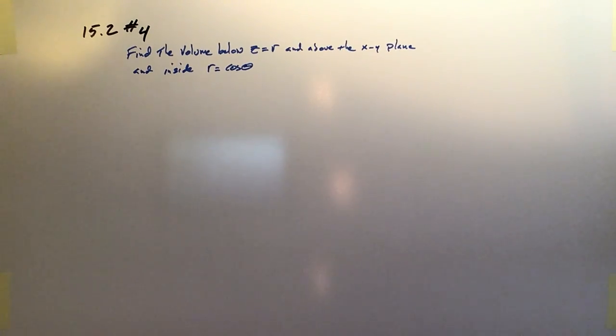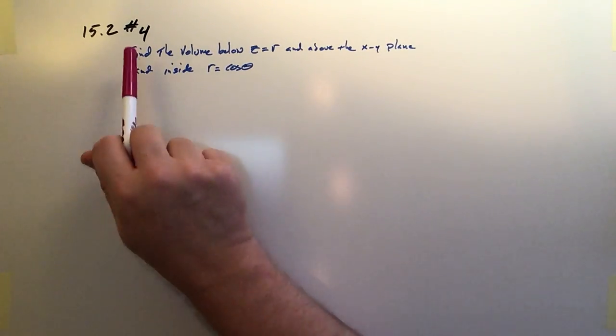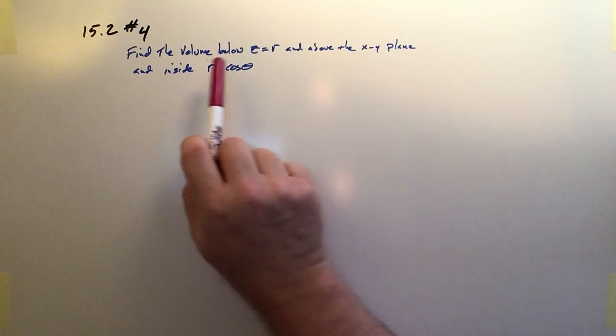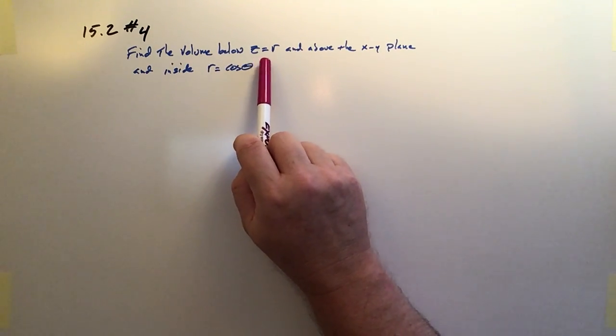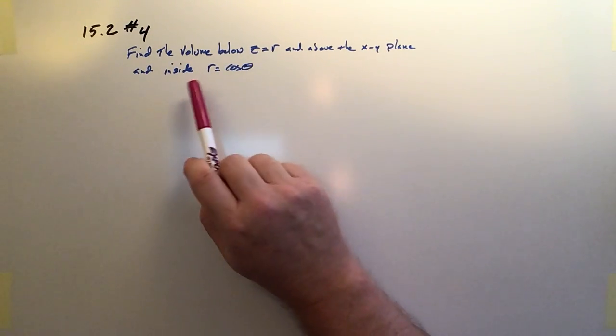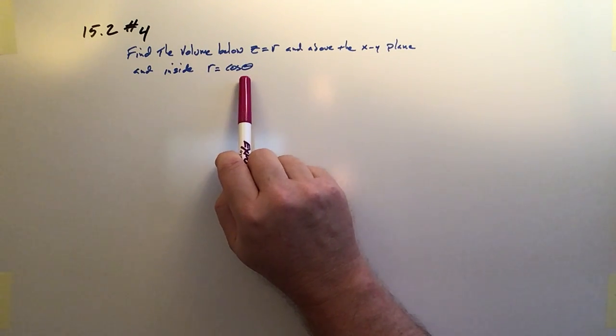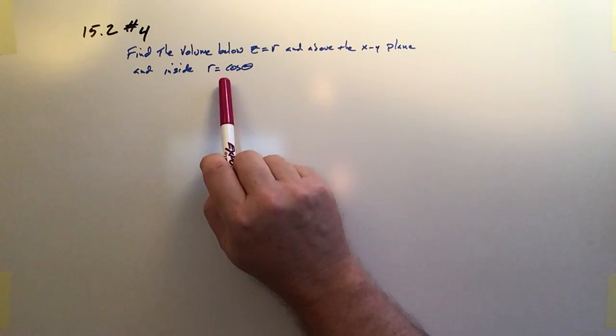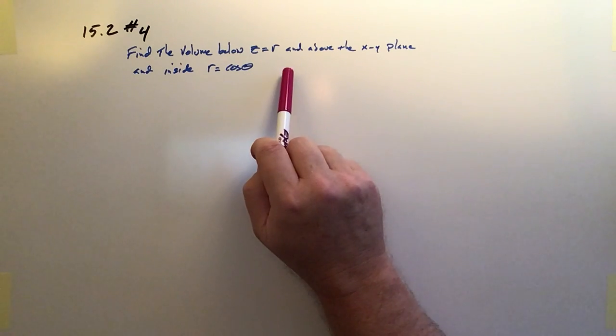And by and large it looks very much like polar coordinates. This first problem is number four. Find the volume below the height z equals r, where r is defined as cosine theta. Since r equals cosine theta, z equals cosine theta as well.